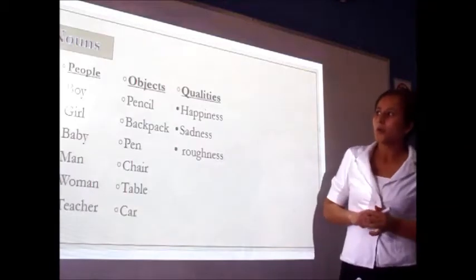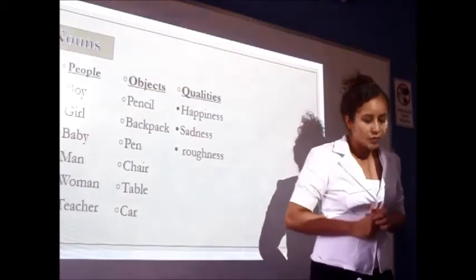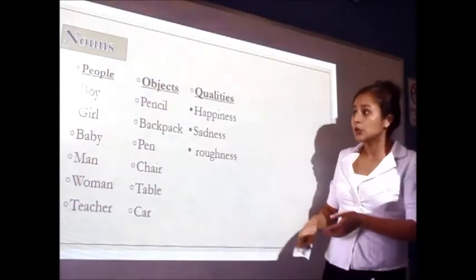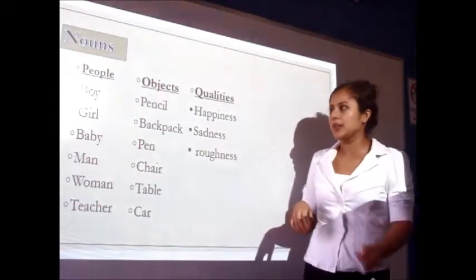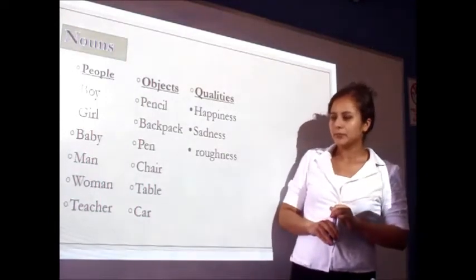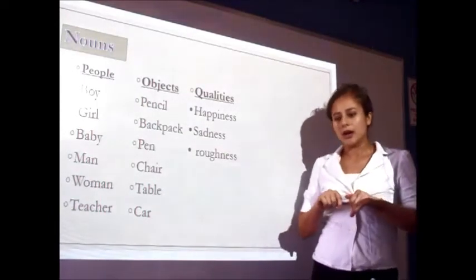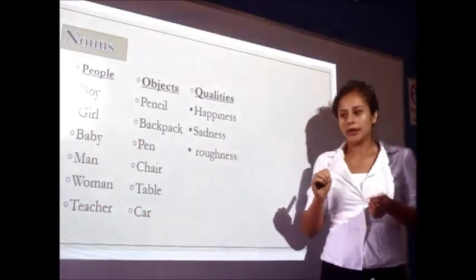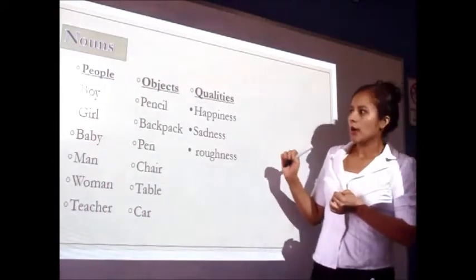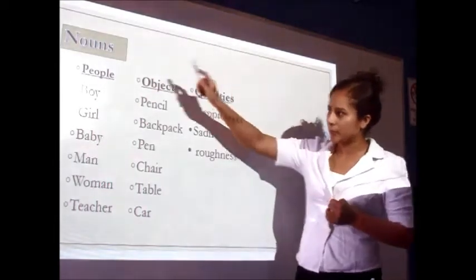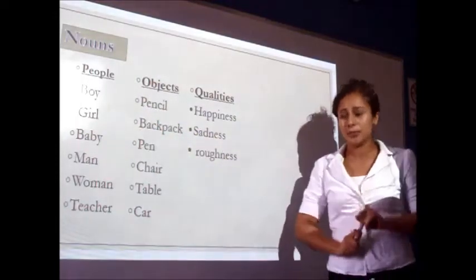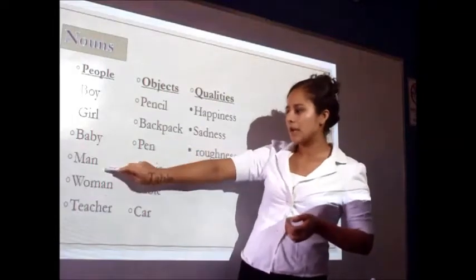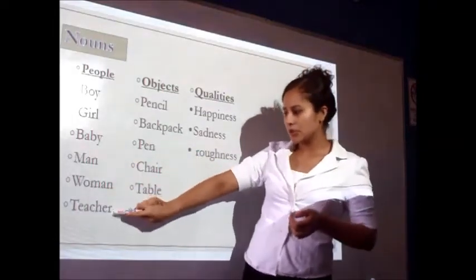First of all, we are going to talk about nouns. Nouns are words that we can use to identify things, people, or qualities. We can also identify phenomena or feelings. Examples of people include: boy, girl, baby, man, women, and many more.